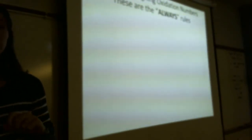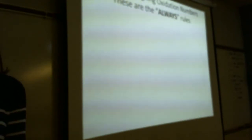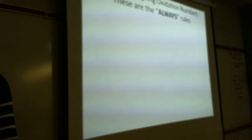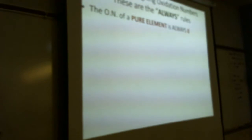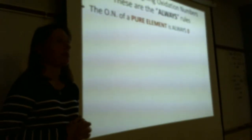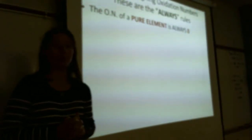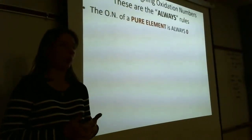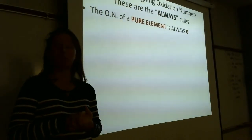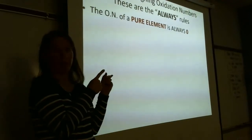You need to commit these rules to memory — big star, memorize them. There are some rules that always apply and some that usually apply. We'll begin with our always rules. The oxidation number of a pure element is always zero. For instance, sodium metal is zero, chlorine gas Cl2 is zero, iron metal Fe solid is zero. This includes all diatomic gases: Cl2, Br2, I2, F2, O2, N2, H2.